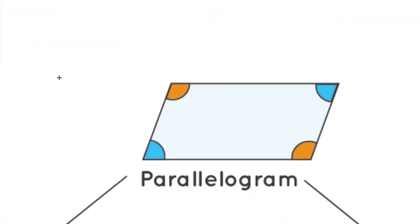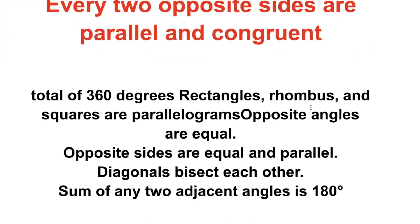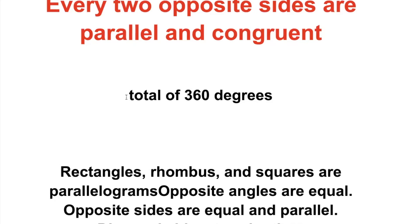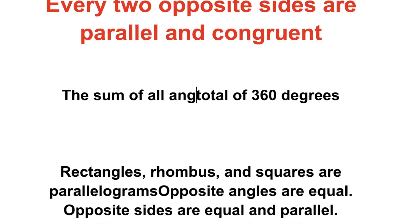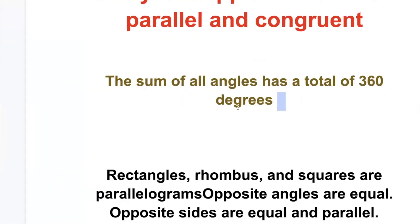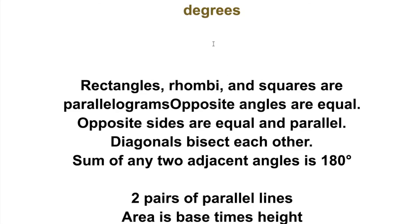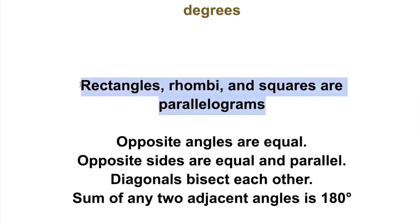Look at my screen — this side up and this side down are parallel and they have the same length, so parallel and congruent. These two sides on the right and left are also parallel and congruent. The sum of all angles has a total of 360 degrees — this is the way you write math. Good job. Rectangles, rhombi, and squares are all parallelograms because every two opposite sides are parallel.